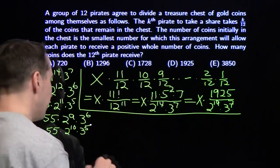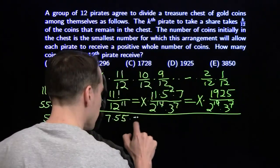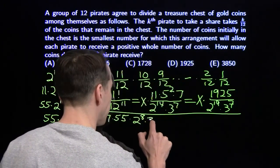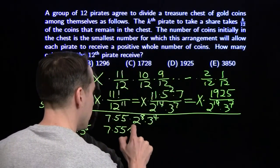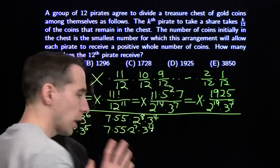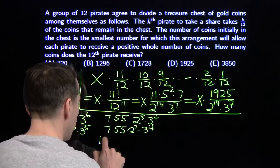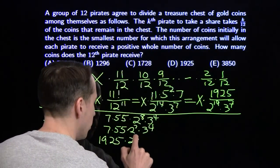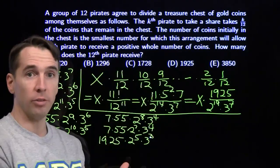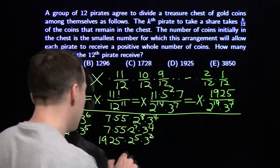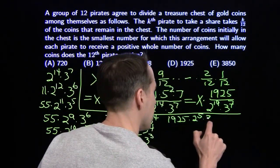The fifth pirate takes 5/12, leaving 7/12, so that's 7 times 55, knocking out 2 factors of 2 and a factor of 3. The sixth pirate takes half and leaves half — pretty easy, just knocking out another factor of 2. The seventh pirate takes 7/12, leaves 5/12, and we know 5 × 7 × 55 is 1925, leaving 1925 × 2^5 × 3^3. The eighth pirate takes 8/12, leaves 4/12 (1/3), leaving 1925 × 2^5 × 3^2.